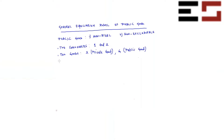Consumers' utility functions are given as follows: the utility of individual one is a function of the amount of private good he consumes and the amount of public good he consumes. So X1 denotes the amount of private good consumed by individual one, and G denotes the amount of public good consumed by individual one. Similarly, U2 is a function of X2 and G — the private good and public good consumed by individual two. So U1(X1, G) and U2(X2, G).